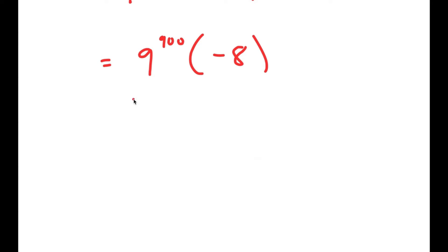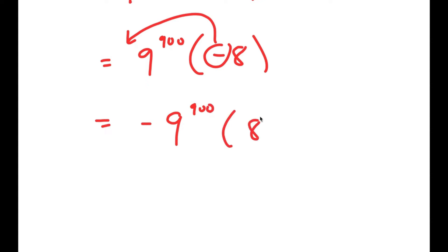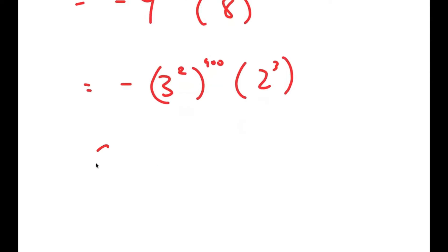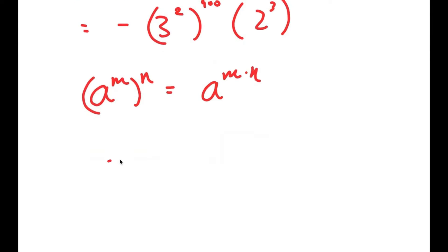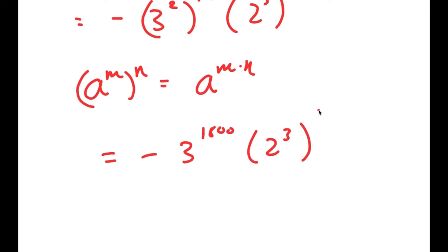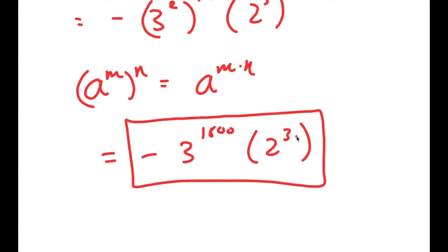Now I want to simplify this as much as possible. We can't get the exact value because 9 to the power of 900 is such a big number, but we can get the simplified form. I'll move the negative sign to the front: negative 9 to the power of 900 times 8. Rewriting 9 as 3 squared and 8 as 2 to the power of 3, and using the property a to the power of m to the power of n equals a to the power of m times n, I get negative 3 to the power of 1800 times 2 to the power of 3. This is the final solution.